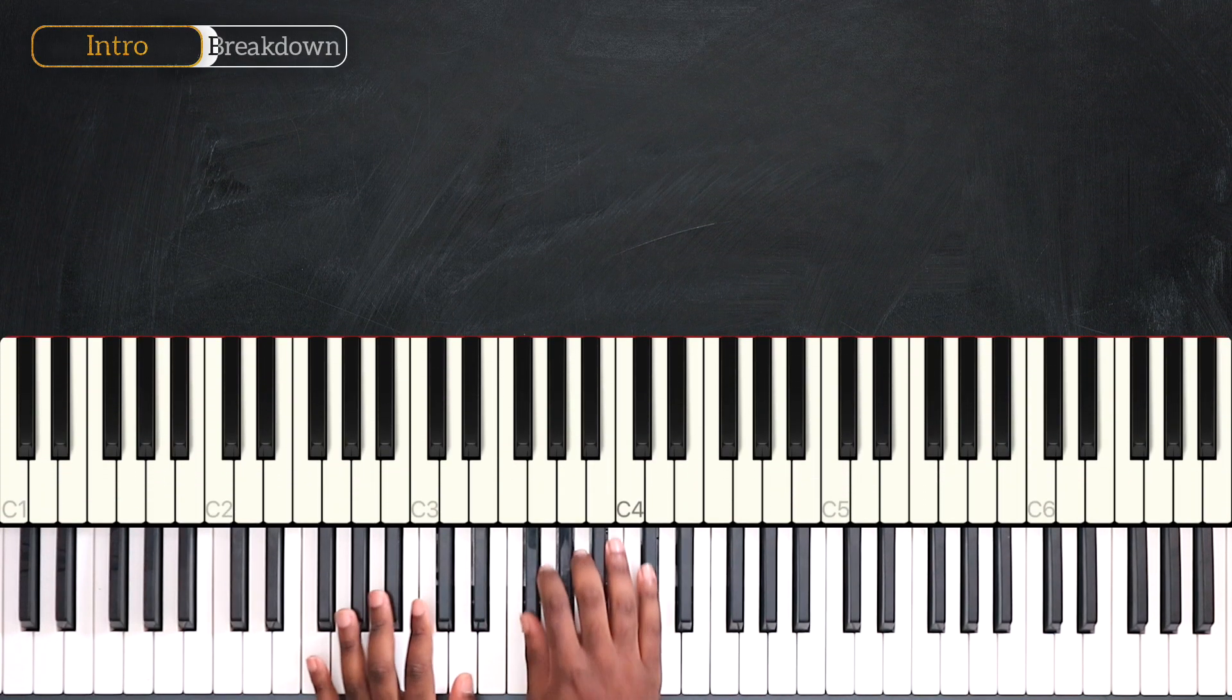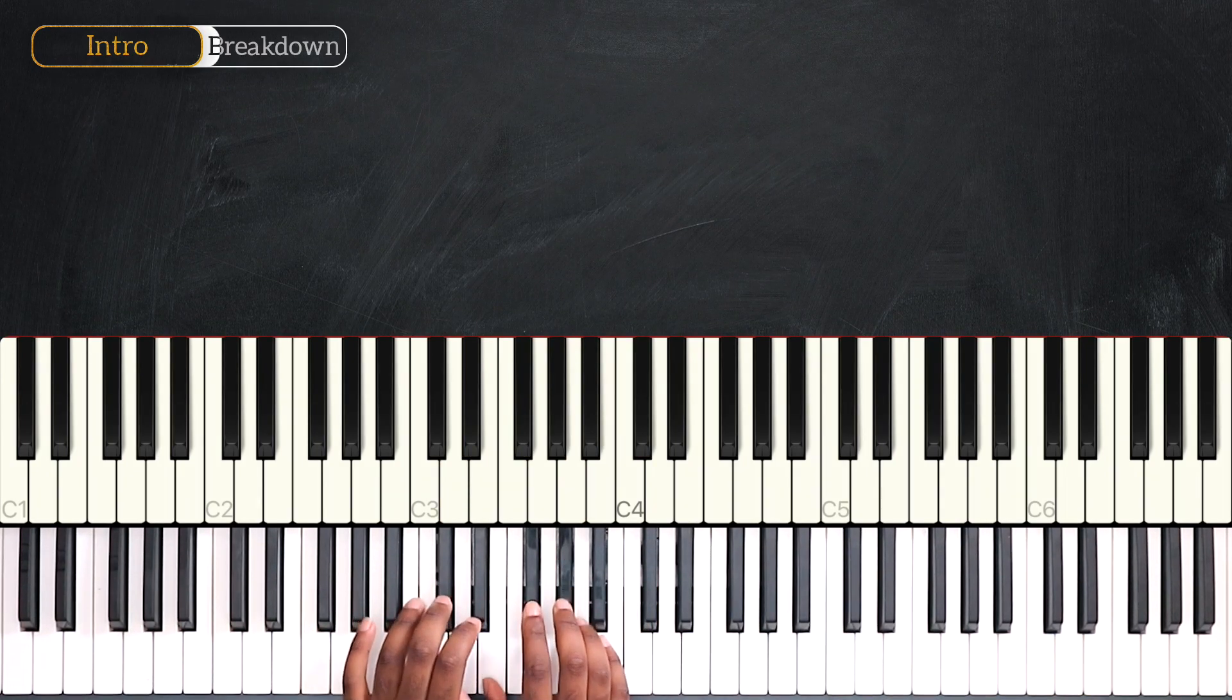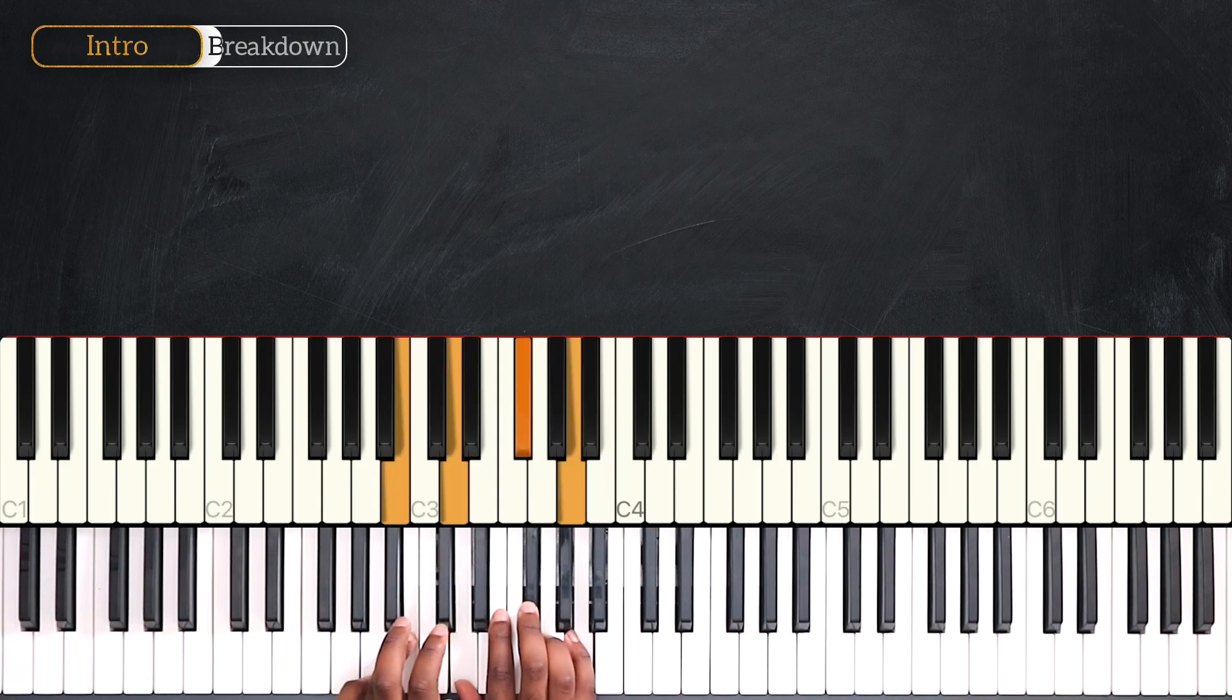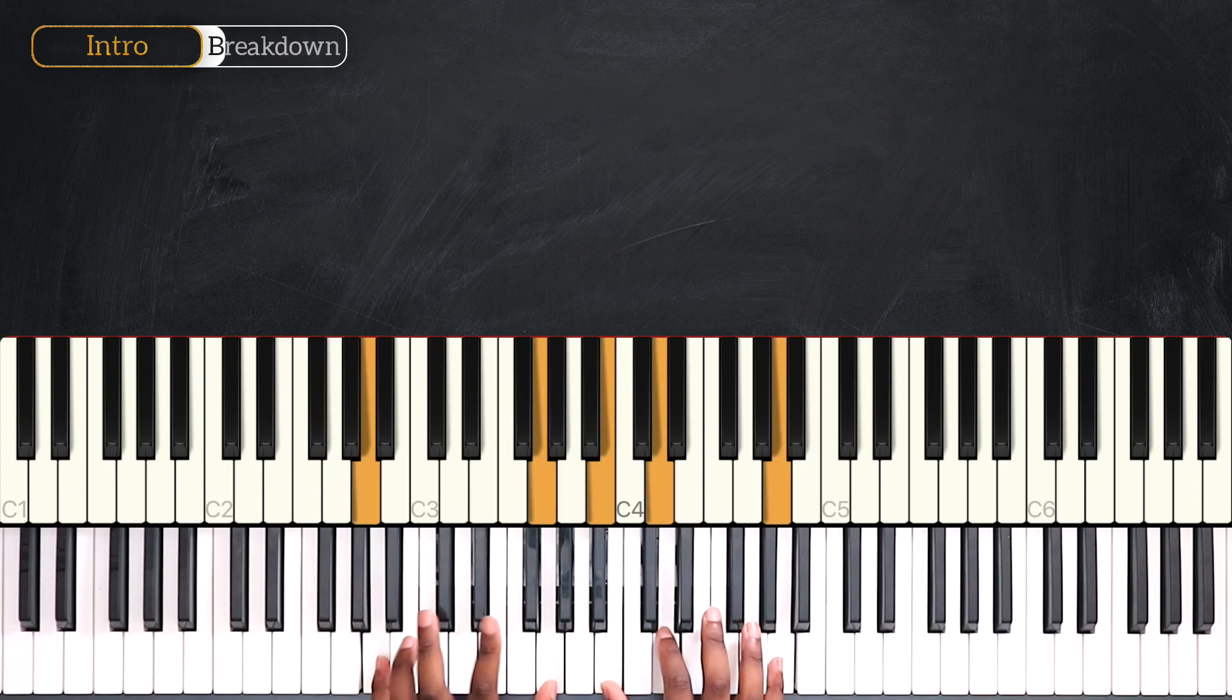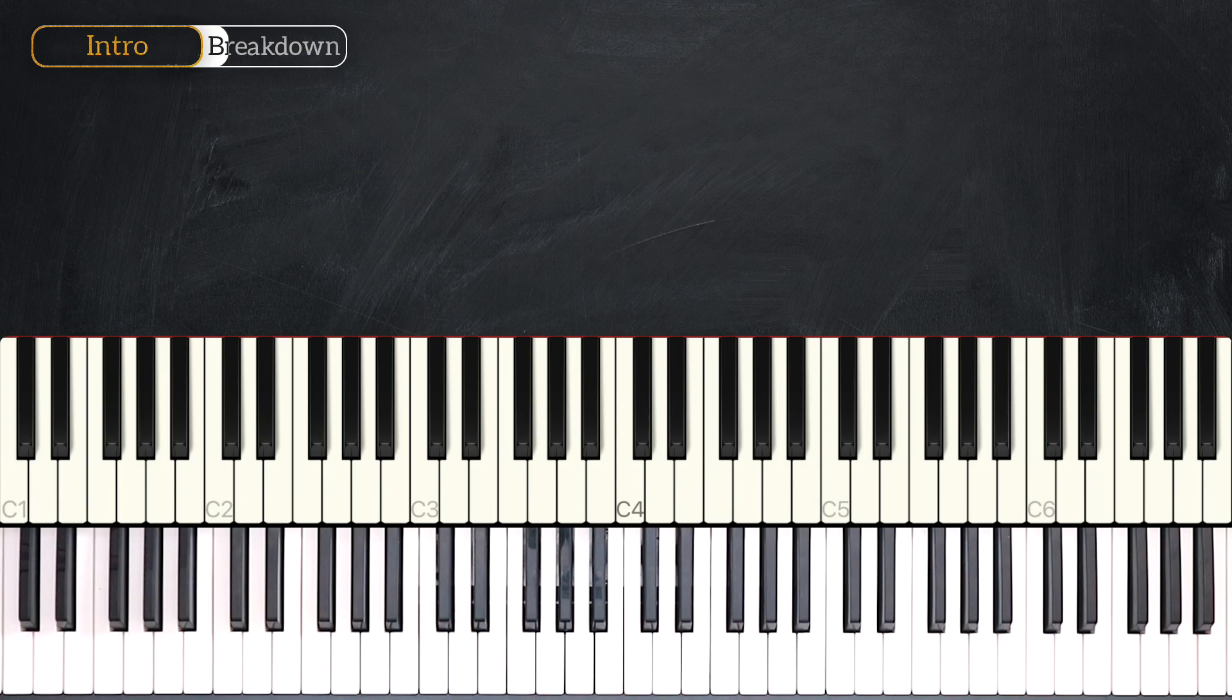So from the top we have D major 7, C sharp minor 7, B minor 7, and then F sharp minor 7, ending with A 11. And now here's the rhythm and playing pattern.